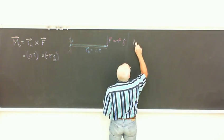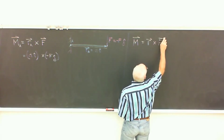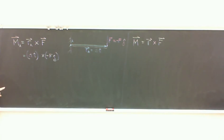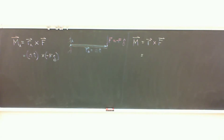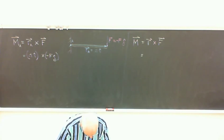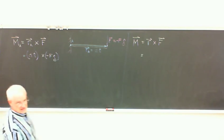Here's the cross product recipe — this works for any cross product. For the i component: ignore the column and row of i, leaving a 2×2 sub-matrix; take the diagonal-down product minus the diagonal-up product, giving r_y·F_z minus r_z·F_y. Then minus the j component: ignore j's row and column, same cross-multiplication gives r_x·F_z minus r_z·F_x. You must keep that minus sign in front of j. Then plus the k component: ignore k's row and column, giving r_x·F_y minus r_y·F_x.